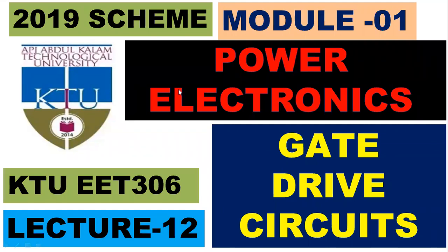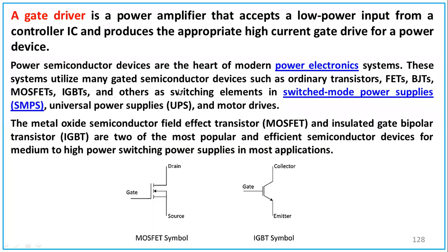Welcome to the twelfth class of module one. In this class we will be talking about gate drive circuits. So far we have talked about different types of switches, and we know why we use them — we need to switch them on and switch them off. A gate drive circuit provides pulses to the gate terminal of a MOSFET, which has gate, drain, and source terminals, so that it is switched on.